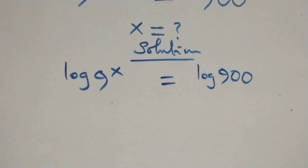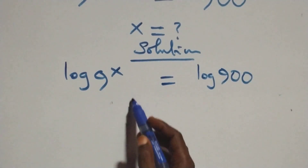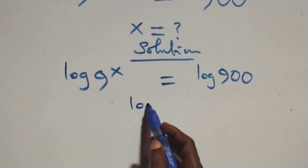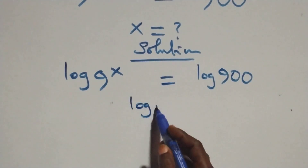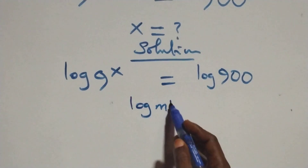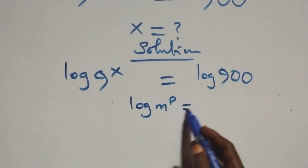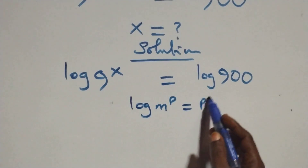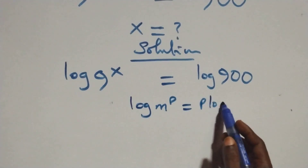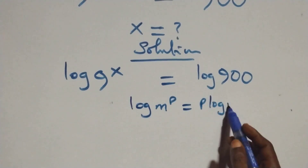Then here we apply the power rule of logarithms. When we have log of m raised to the power p, this is the same as p times log m.